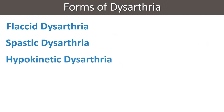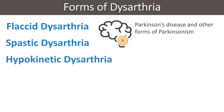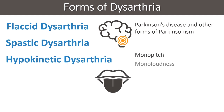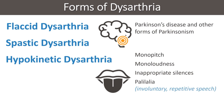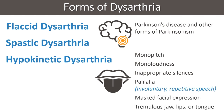Hypokinetic dysarthria is commonly seen in Parkinson's disease and other forms of Parkinsonism. It presents with monopitch, monoloudness, inappropriate silences, palilalia, masked facial expression, and tremulous jaw, lips, or tongue.